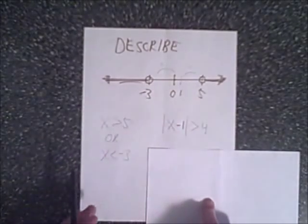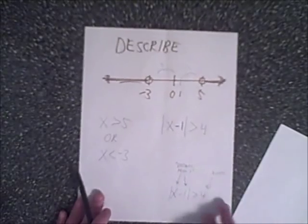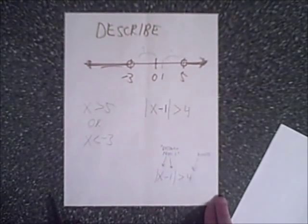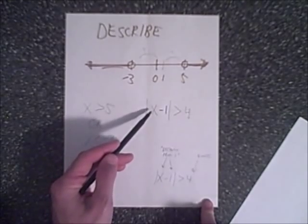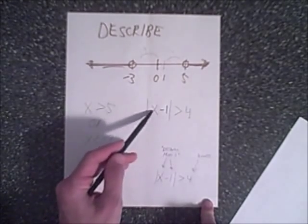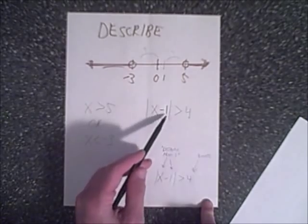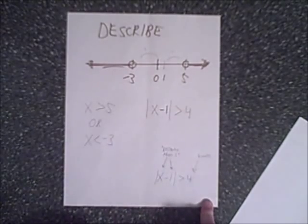And of course you can check your answers to see. And as I've written down here as a note, notice how it's expressed. This is the distance from any x to 1. The difference between x and 1, the distance, must be greater than 4 units.